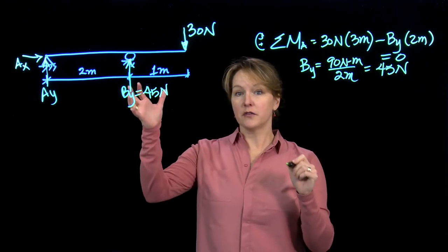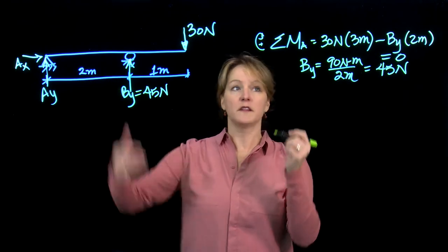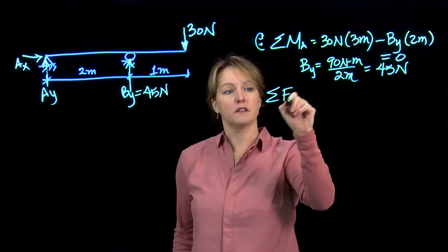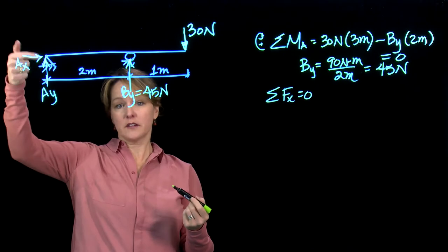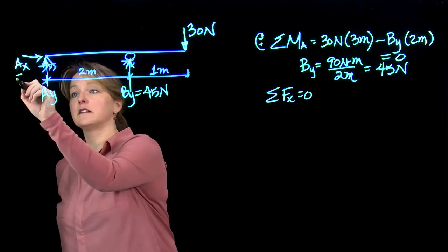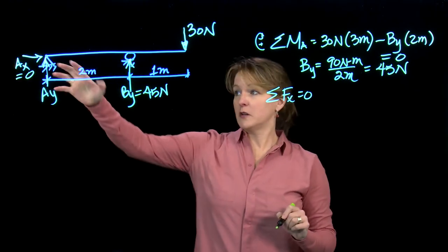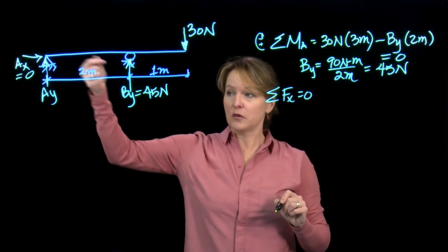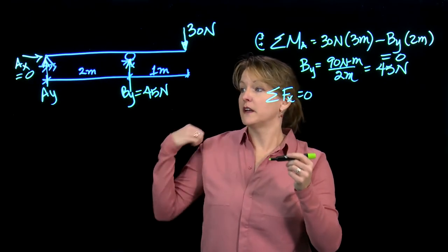I can then sum my forces horizontally. That just means I don't want this beam to translate. Looking at this, the only thing acting horizontally is AX, so that's necessarily going to be 0. I don't need that horizontal support because I don't have any horizontal load on this beam.